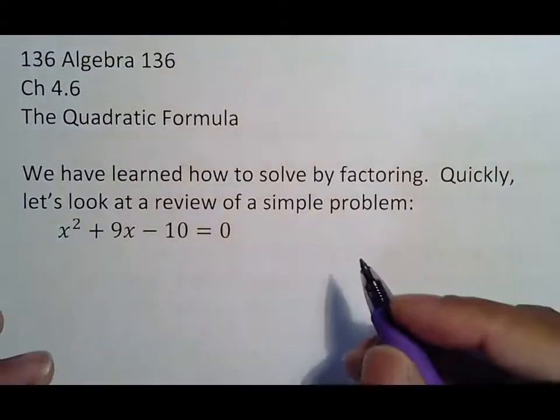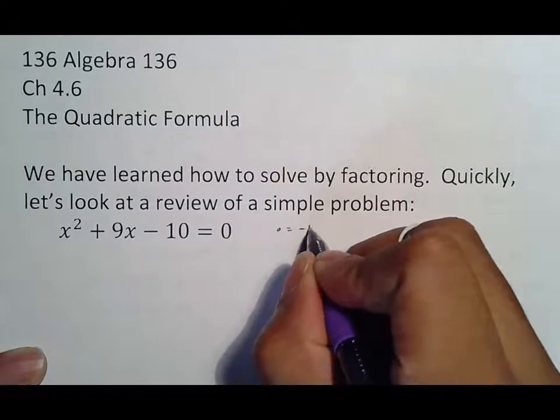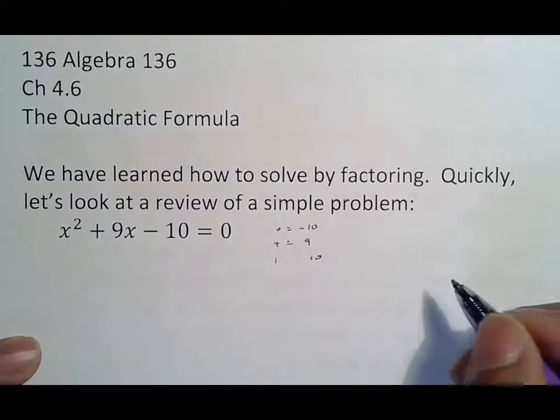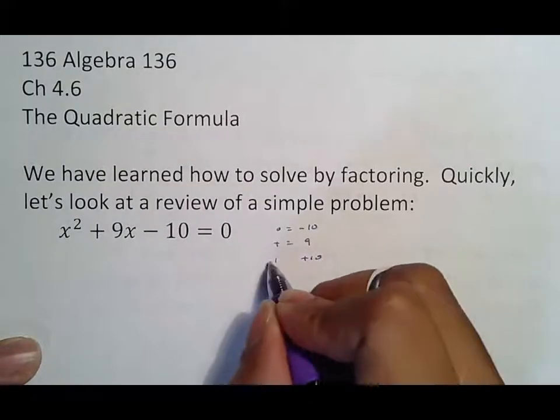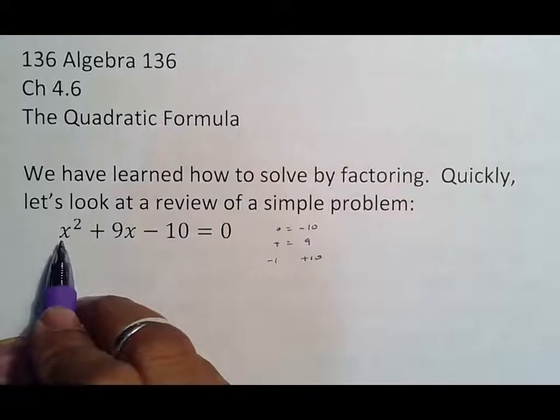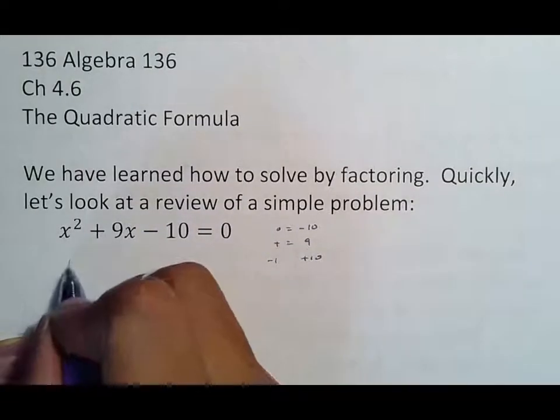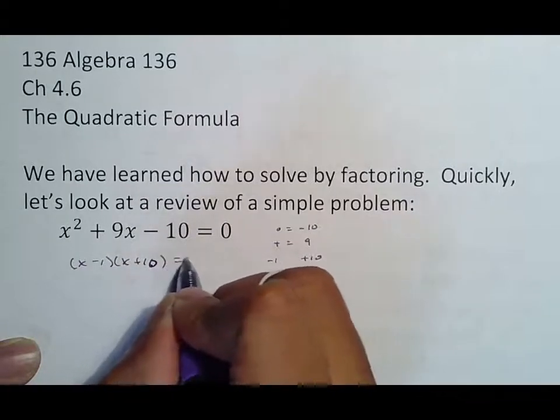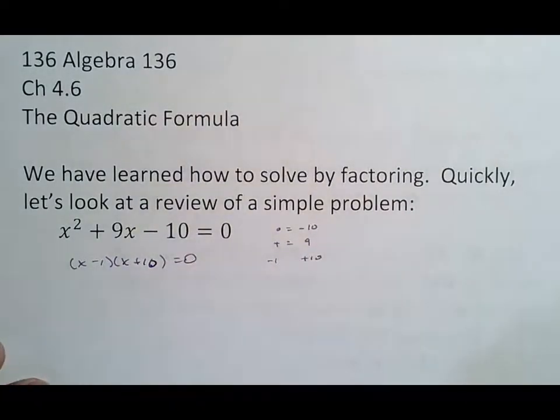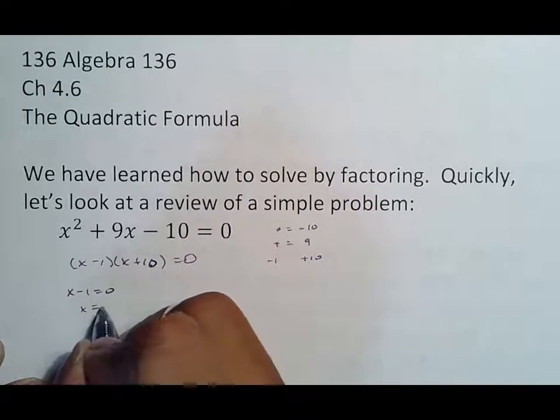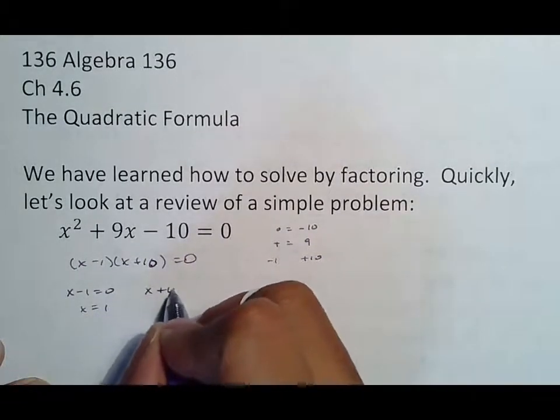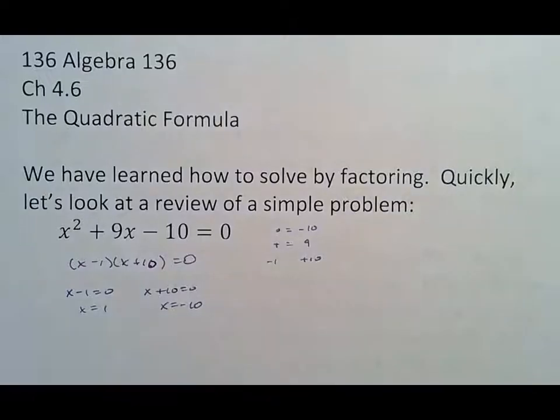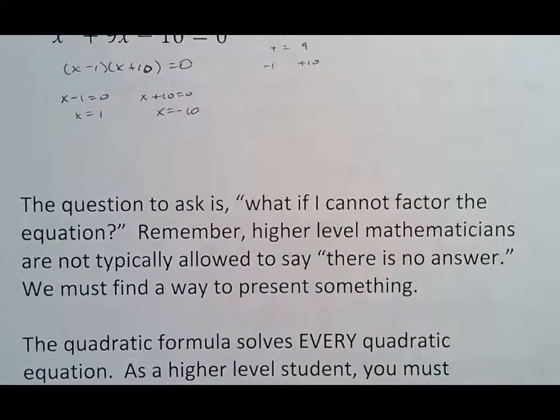A quick sample problem on how to solve by factoring: x² + 9x - 10 = 0. We're looking for numbers that multiply to make negative 10, add to make 9. I know those numbers are 1 and 10 with a positive 10 and a negative 1. Since there's nothing attached, these two numbers can just transfer over. So x - 1, x + 10 equals 0, which means x - 1 equals 0 so x is 1, and x + 10 equals 0 so x is negative 10. Those are my two solutions. The question is, what if I cannot factor the equation?